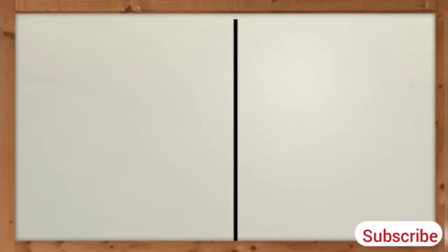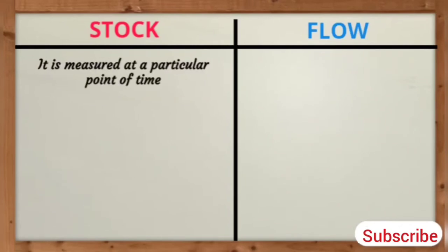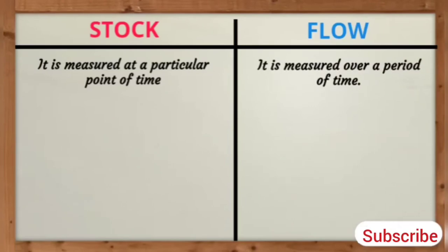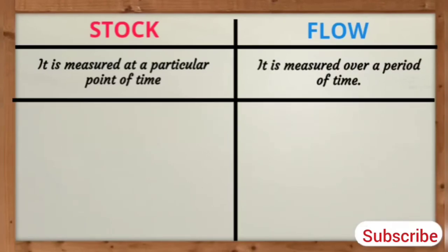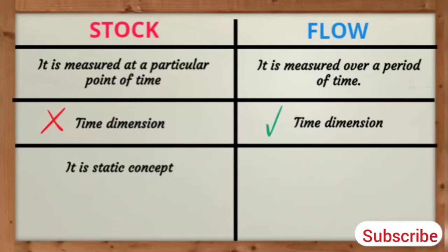Let us understand the concept behind stock and flow. Stock is measured at a particular point of time, while flow is measured over a period of time. Stock does not have a time dimension, while flow has a time dimension as its magnitude can be measured over a period of time. Stock is a static concept, while flow is a dynamic concept.